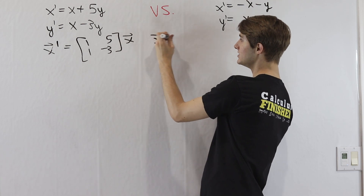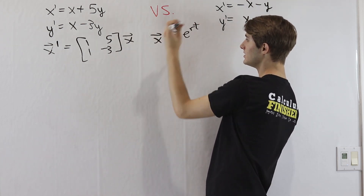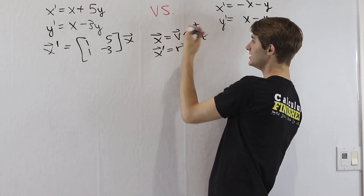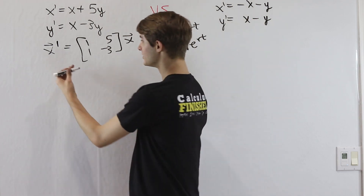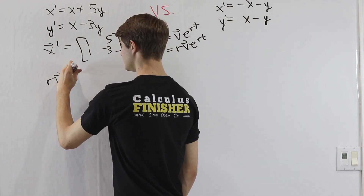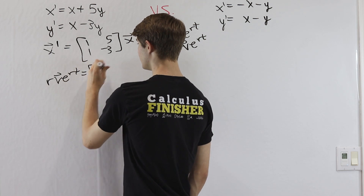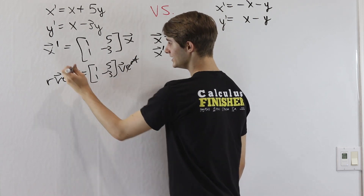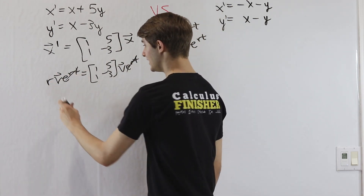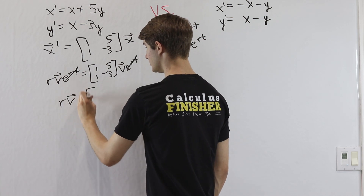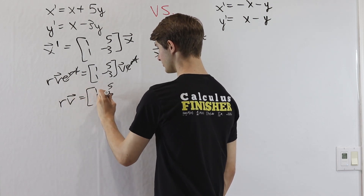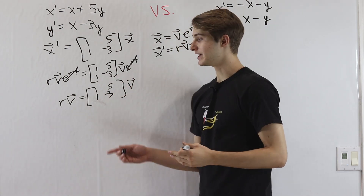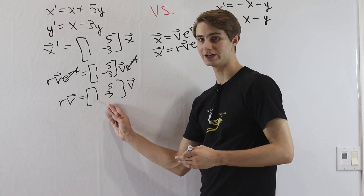Once we have our equation in this form, we know we're going to guess that x equals some vector v times e to the rt, which means x prime is rve to the rt, since v is a constant vector. That gives us rve to the rt equals the matrix 1, 5, 1, negative 3 times ve to the rt. We cancel out the e to the rt on each side, giving us r times v equals that matrix times v.